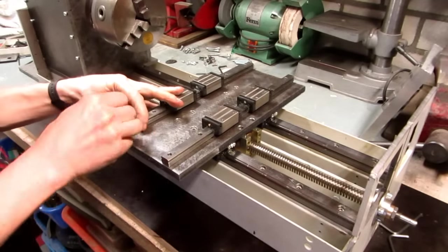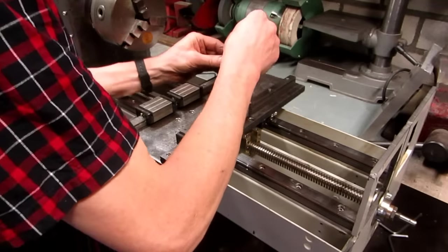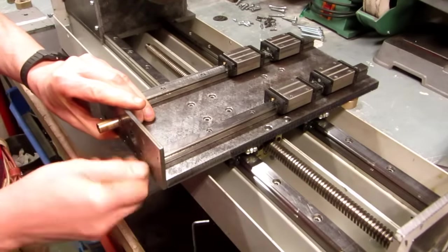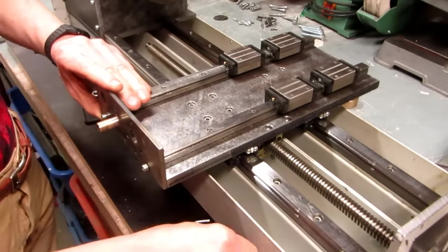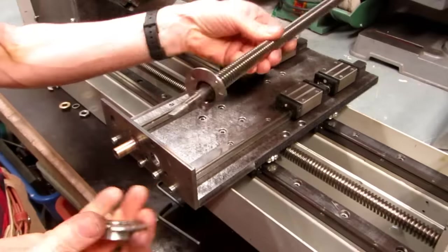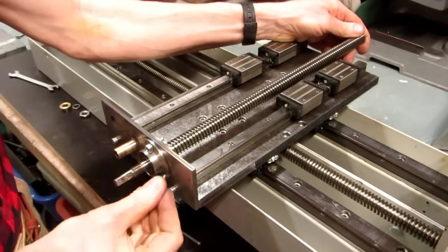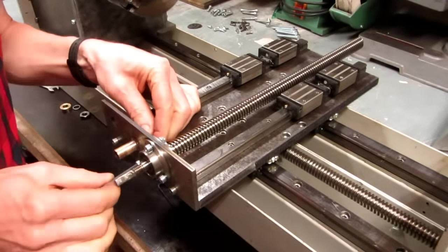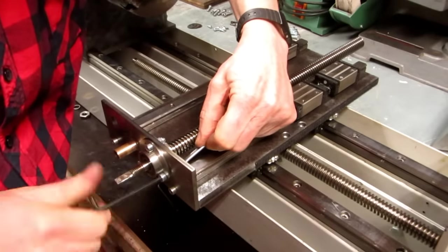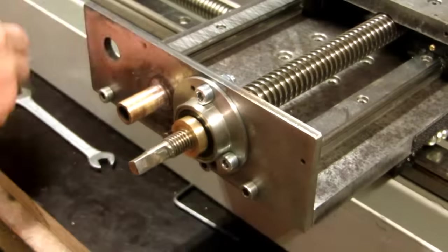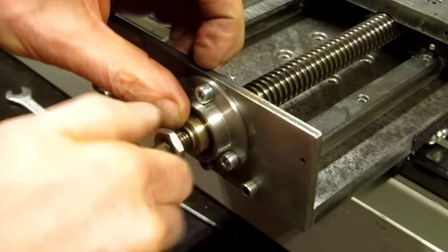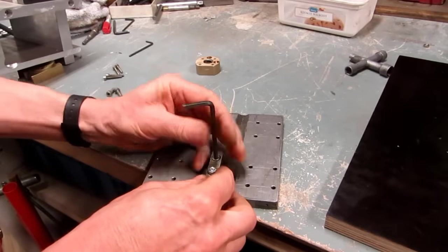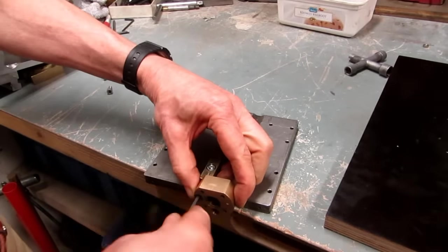Now come the 15mm linear bearing rails for the cross-slide and the front plate of the cross-slide. The cross-slide lead screw is the same type as the one controlling the main carriage. It is fastened to the front plate with 2 bearings. The bronze lead screw nuts are bolted firmly to the cross-slide top plate.